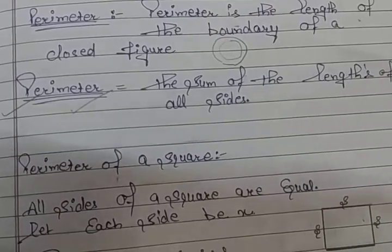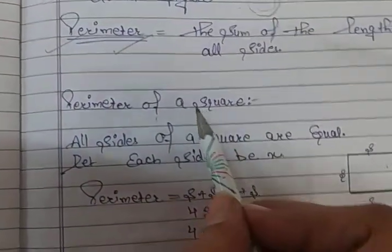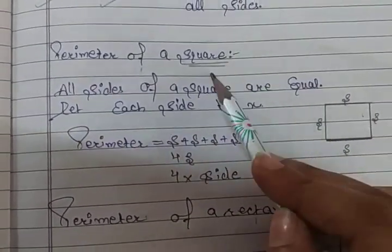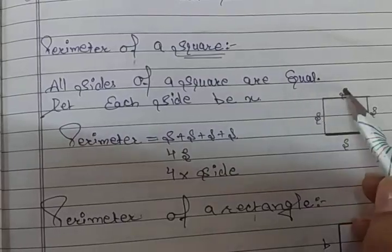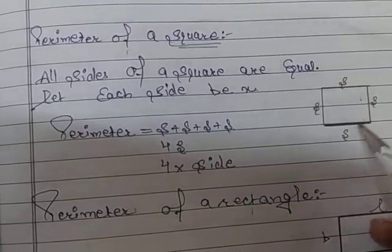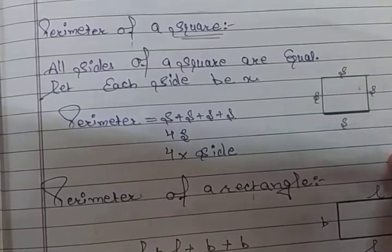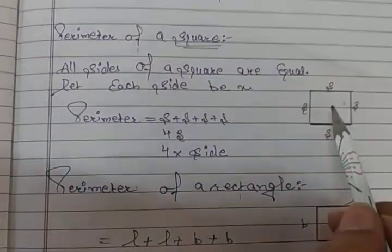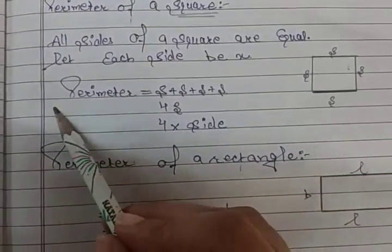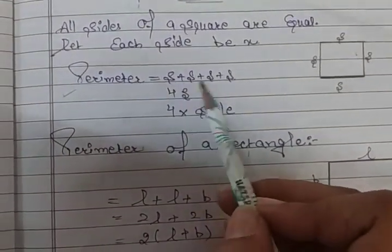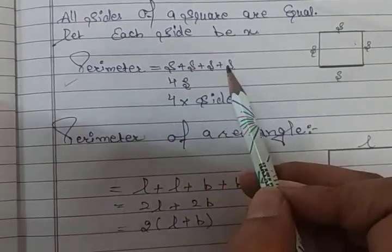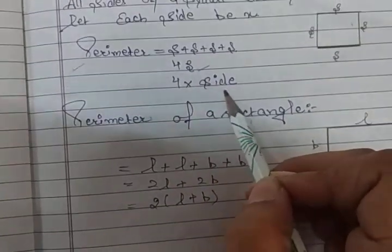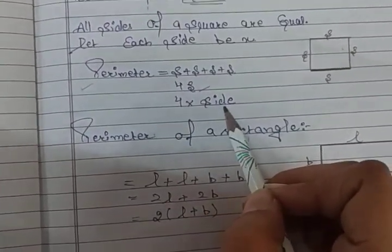After this, the parameter questions hain for different figures. We are having the parameter of rectangle and square. First we discuss square. Square ke agar 4 sides aap s le rahe ho, and 4 sides agar s hain, to aapka perimeter kya ho jae ga? Sum of all sides — sabhi sides ko jab aap plus karte ho: s plus s plus s plus s, that is 4 times s. That means perimeter of square is 4 multiplied by side.